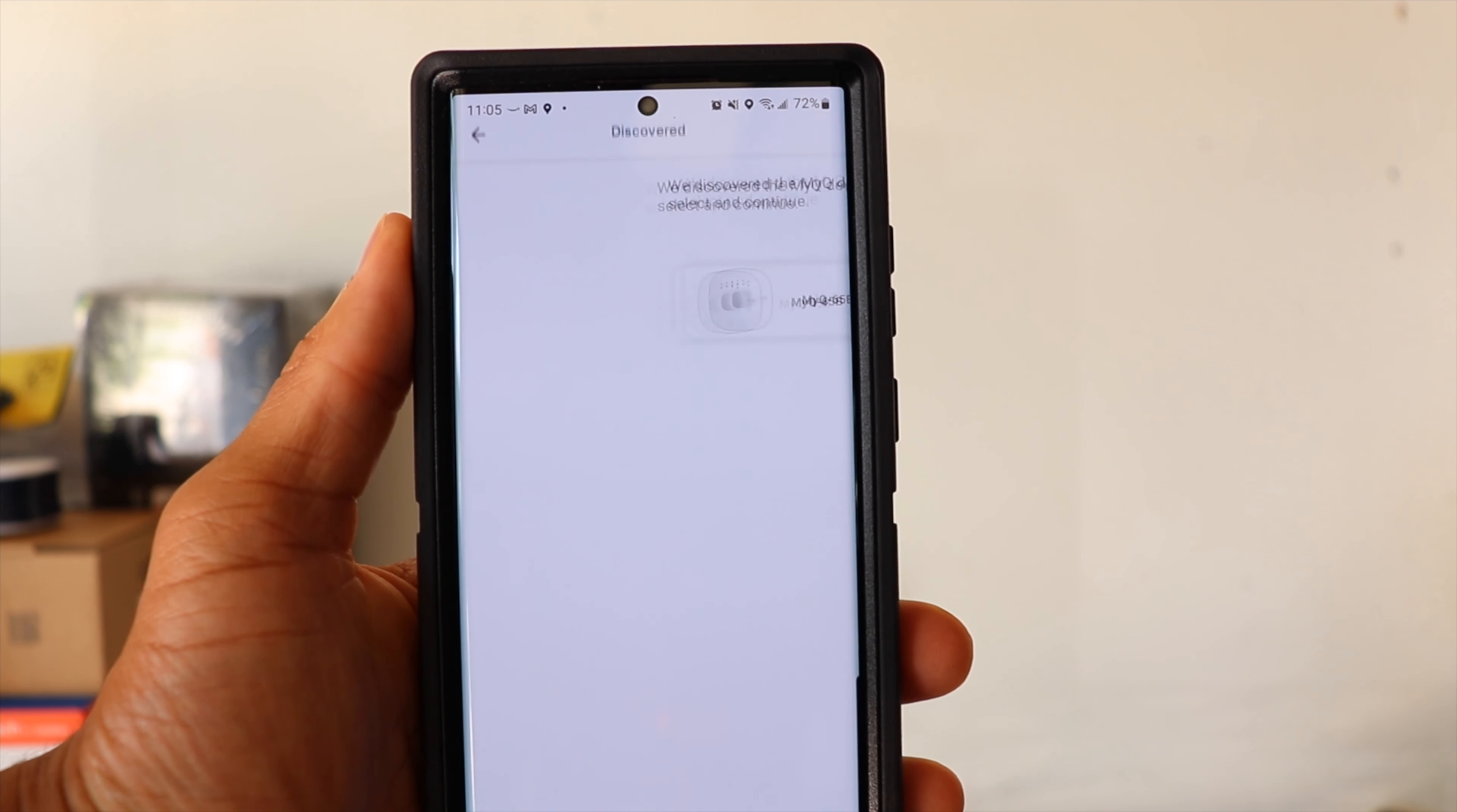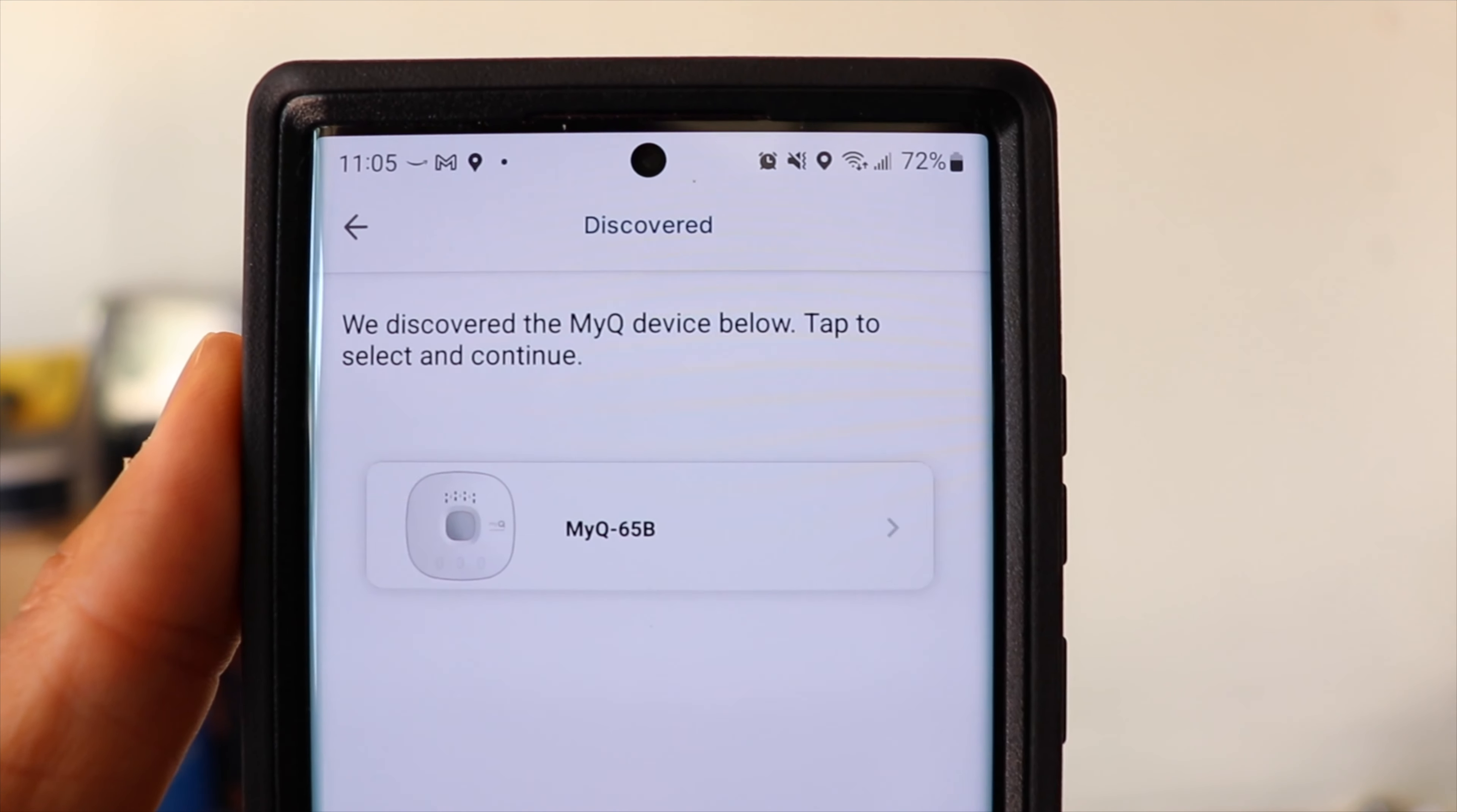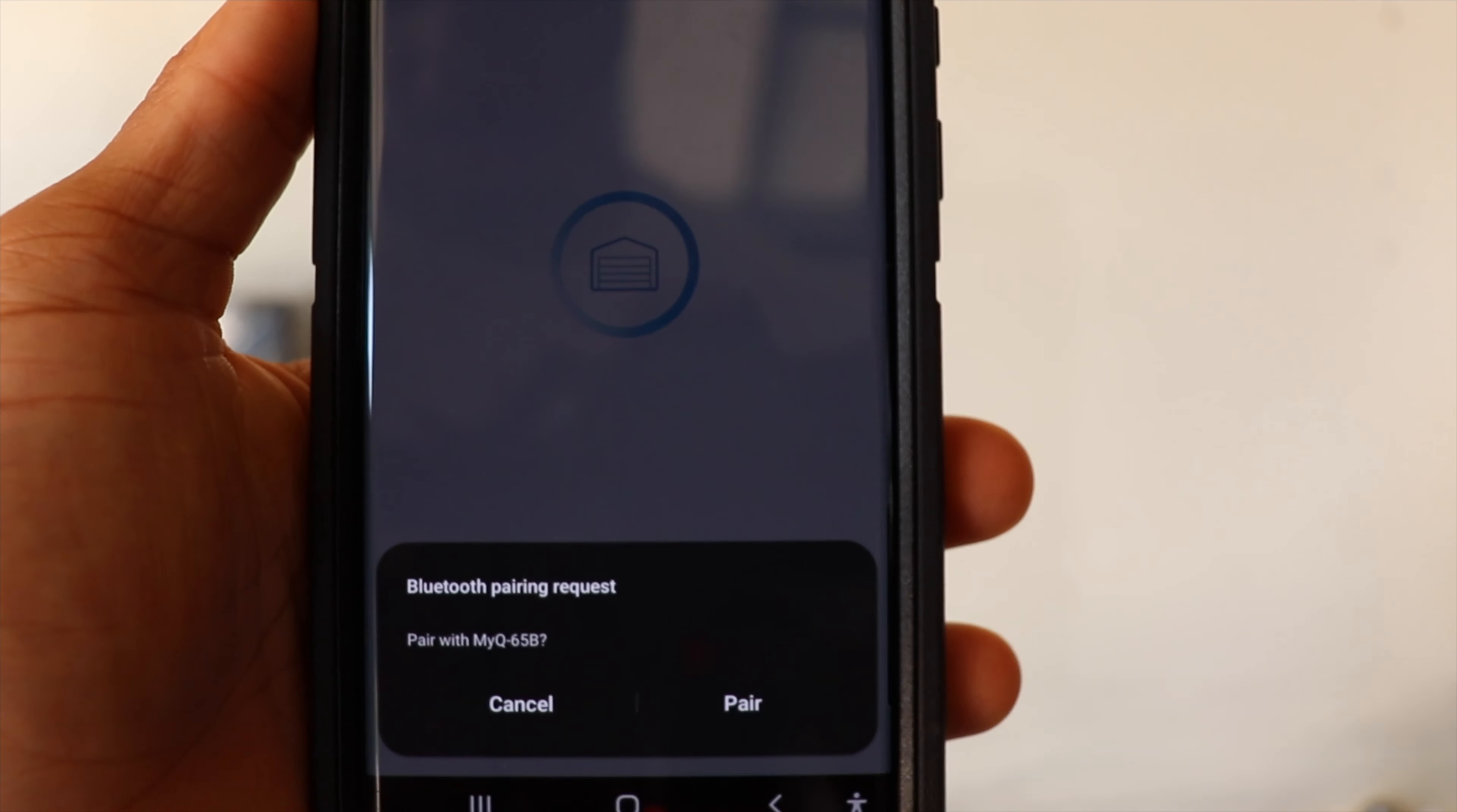So then we'll go back into the app and we'll hit next. If all goes well, the app should discover your device. You want to go ahead and pair the device to your phone using Bluetooth.